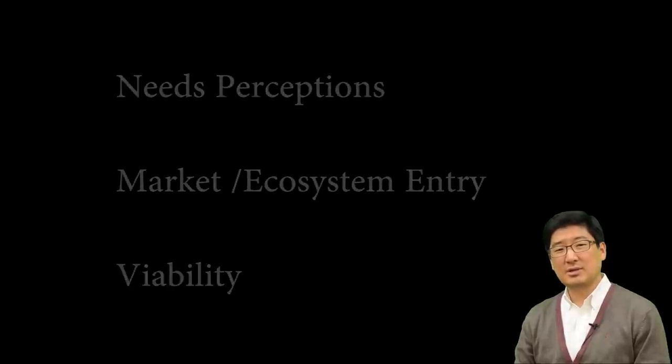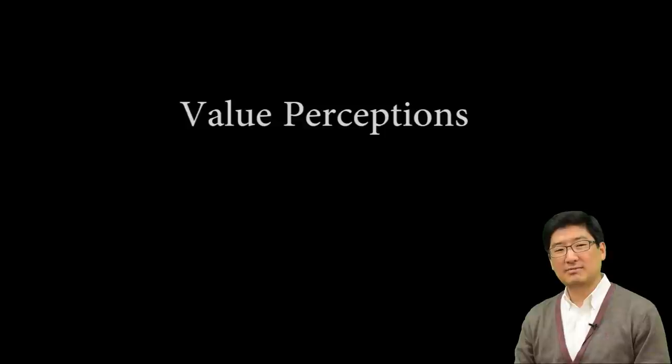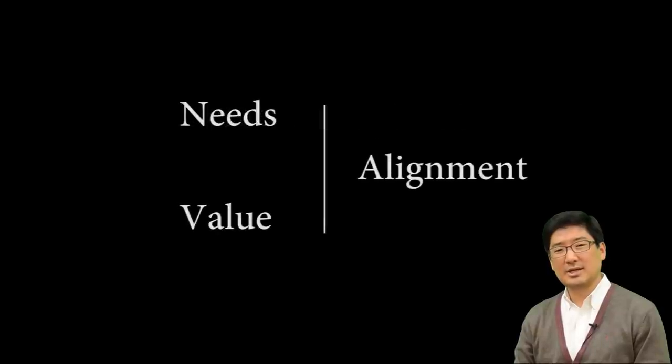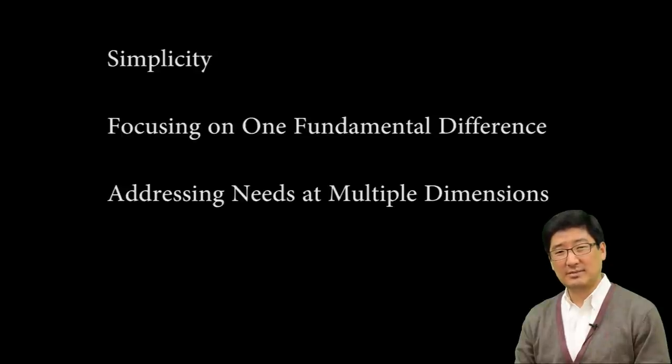Overall, meeting both needs at the same time would take a whole lot of energy and innovation. This is directly linked to value perceptions of all constituencies in an ecosystem. If more constituencies in your ecosystem are on the same page and more of their value perceptions and needs are aligned, things get much easier and your solution is more likely to sustain longer. I call these needs alignment and value alignment. I hope you could leverage these points and design your solution that will have easier entry and longer lifetime. Again, the key words here are simplicity, focusing on one fundamental difference, and addressing needs at multiple dimensions.